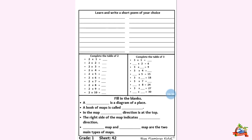Now the table of seven. Seven ones are seven. Seven twos are fourteen. Seven threes are twenty-one. Seven fours are twenty-eight. Seven fives are thirty-five. Seven sixes are forty-two. Seven sevens are forty-nine. Seven eights are fifty-six.